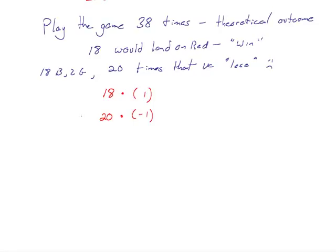In the end, if I add these up, my 18 plus negative 20, I'm down two dollars after 38 games. This is why the casino is going to make money in the long run. If those outcomes are all equally likely, every 38 plays theoretically I've lost two dollars.